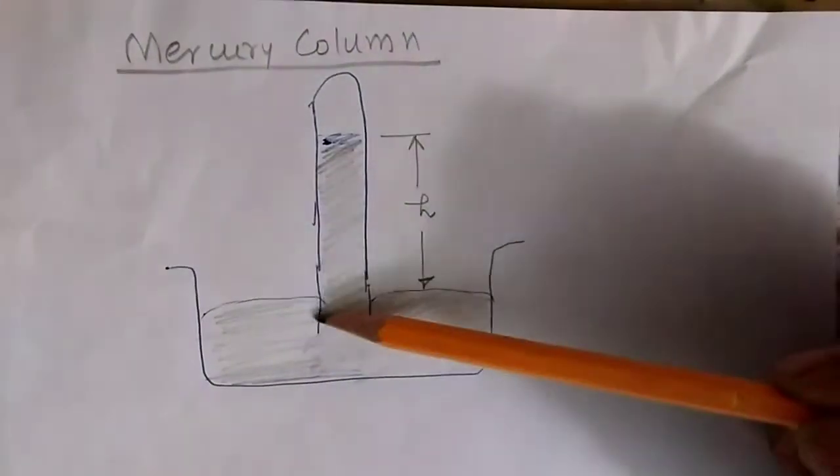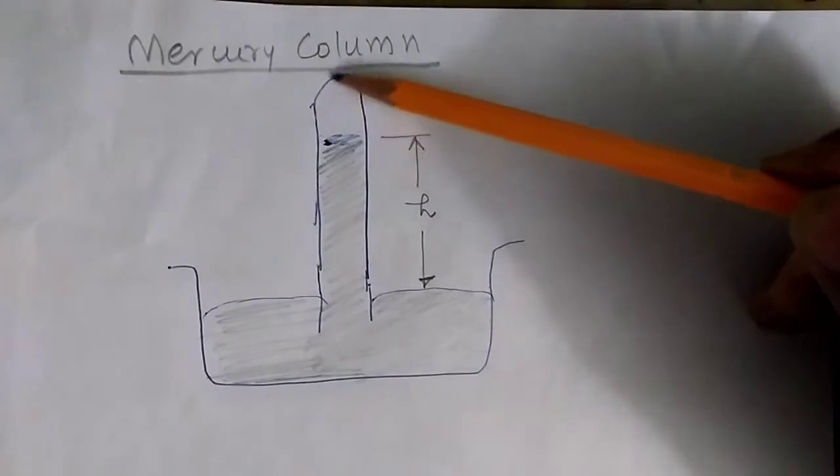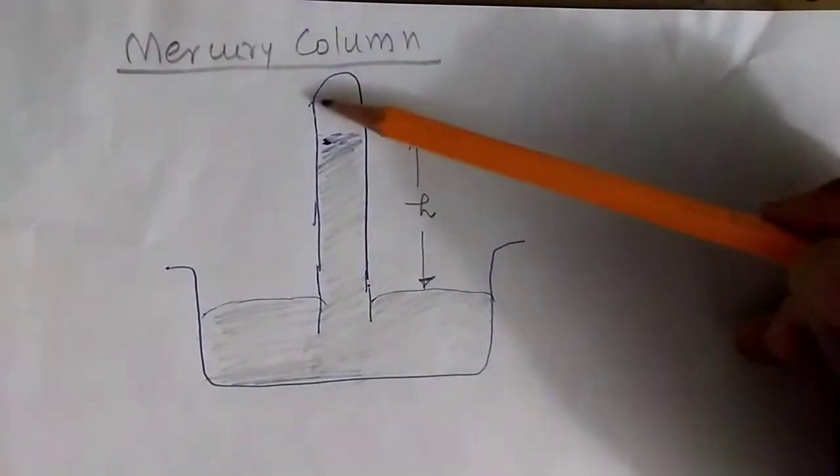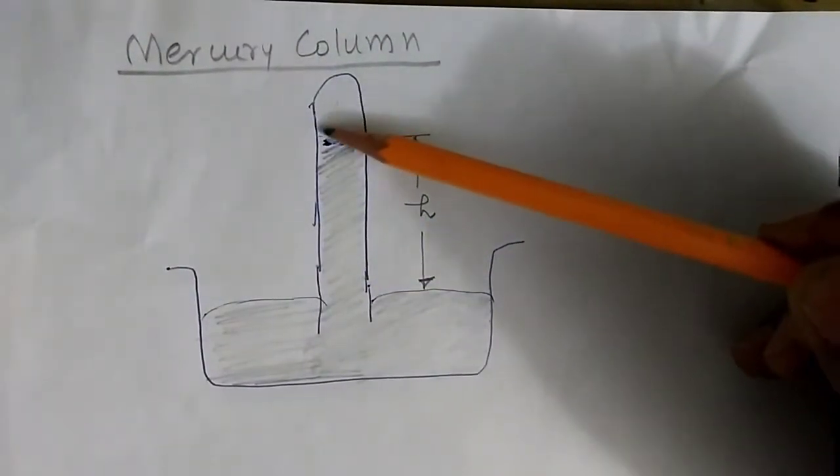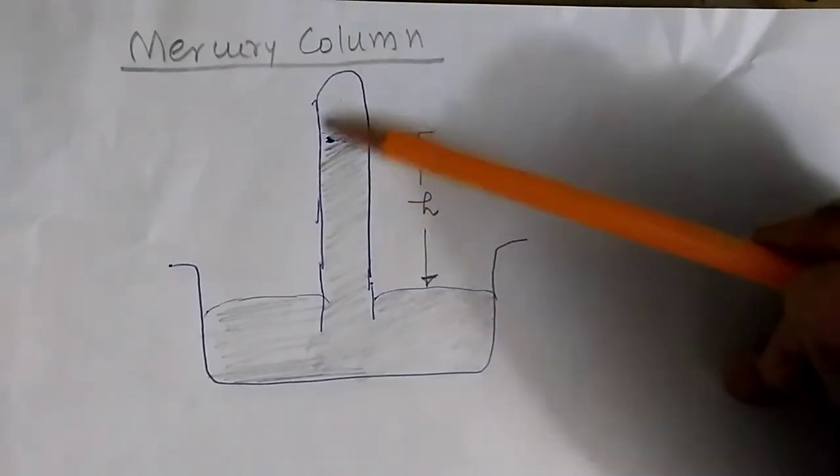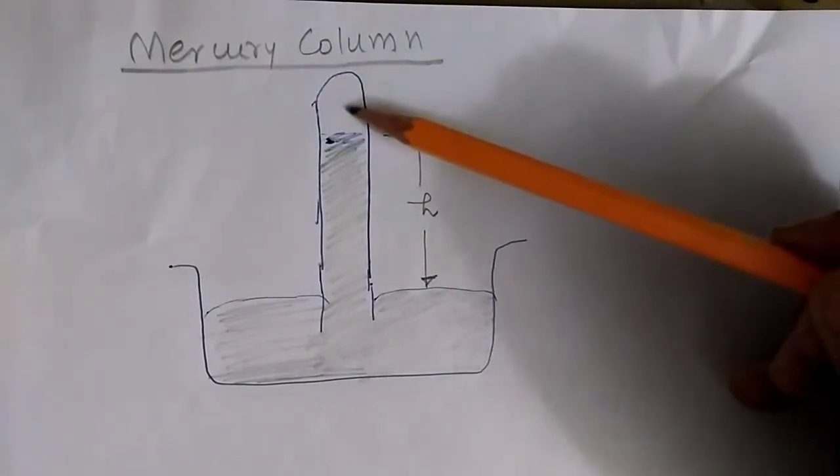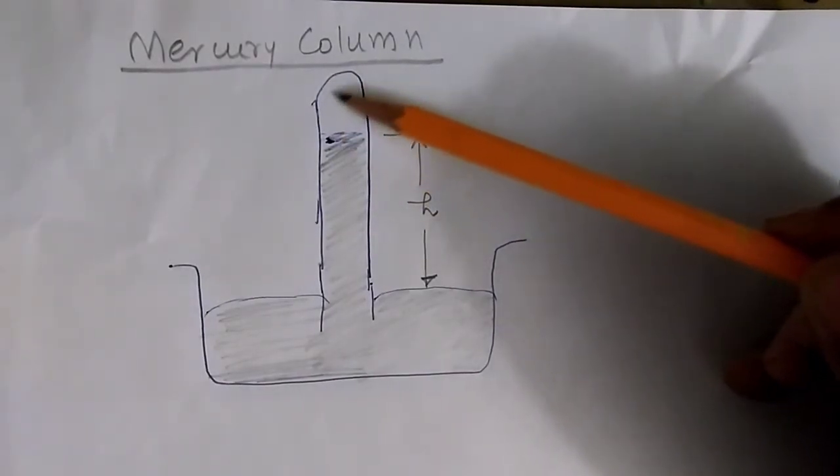Essentially, a mercury column is a very simple device. It has a long glass tube. On the top side is vacuum. There is no air in it. It can possibly be invented by first filling it all the way up and then allowing the mercury to fall down to create a vacuum here.